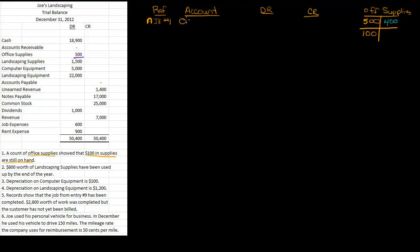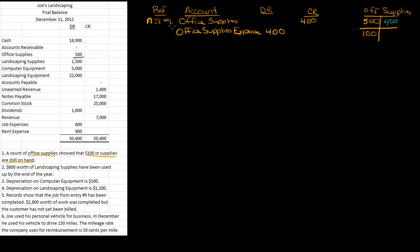My first account is office supplies, and I'm going to credit the account $400. What happened to those supplies? We used them up. And when we use something up, we say that something has expired, and that becomes an expense. So we're going to debit office supplies expense $400. That shows that we used up the office supplies.